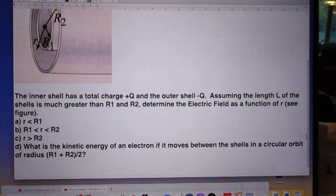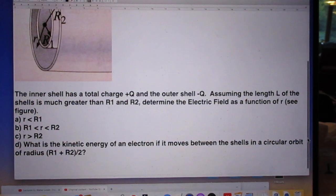The second question is that small r is smaller than R2 but larger than R1, so it's in between the two cylinders. The third question is that r is larger than R2, so it is outside the cylinders.